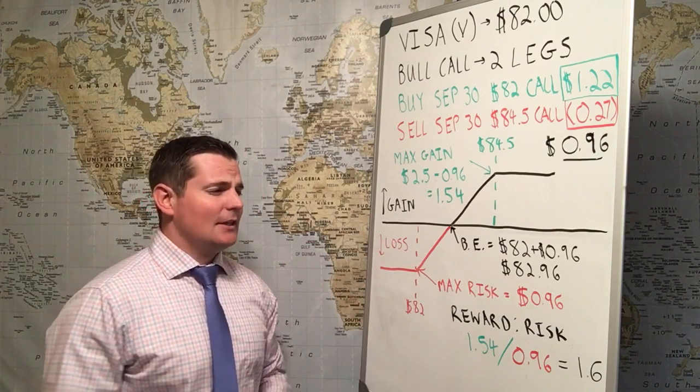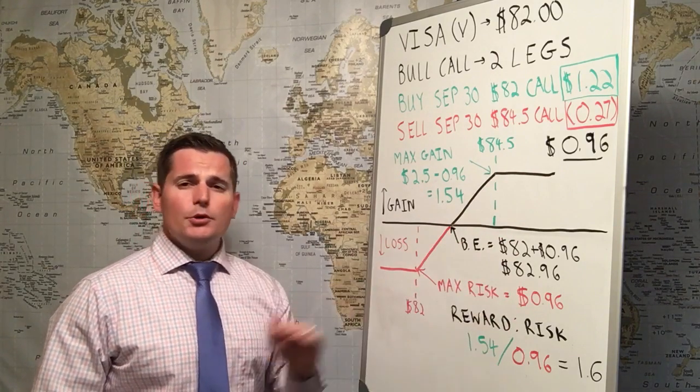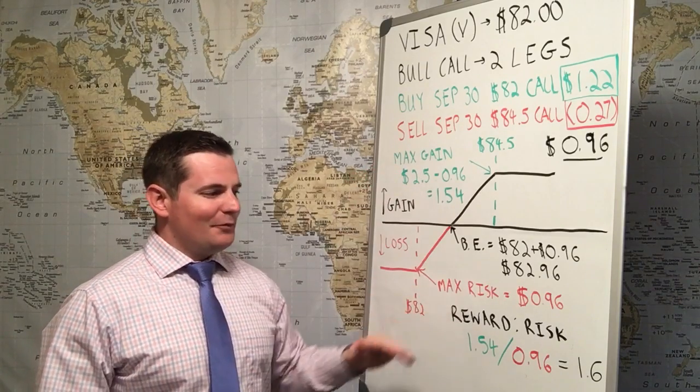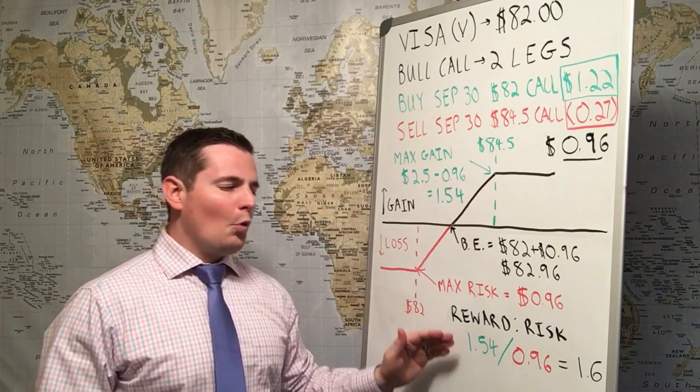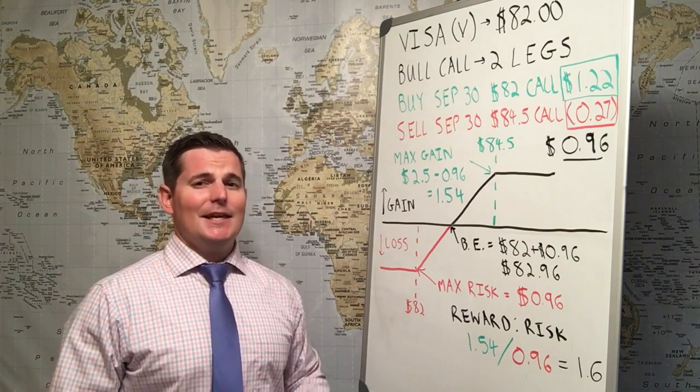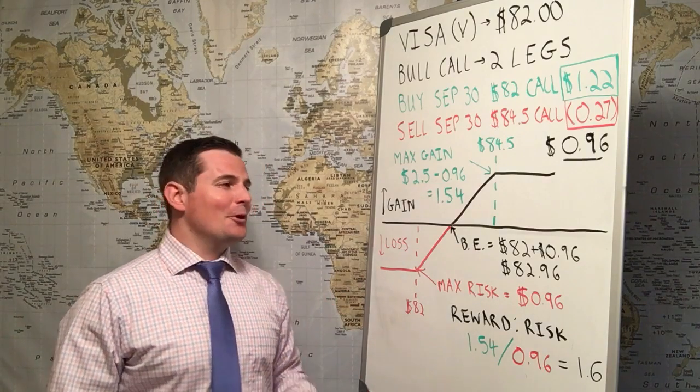Your max risk is the debit, what you're debited from the account. That's the most you can lose on this trade. With those two features, you can calculate a reward to risk ratio. 1.54 over 0.96 is 1.6. That's your risk reward.